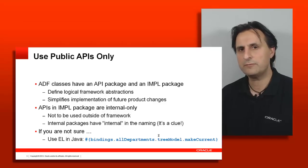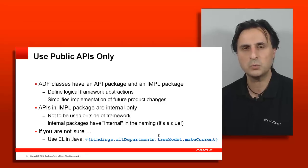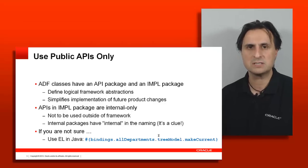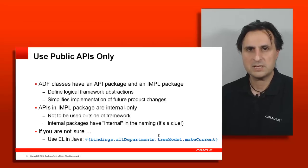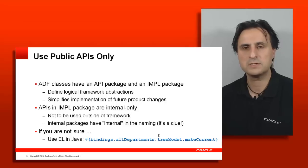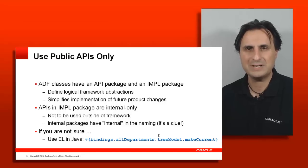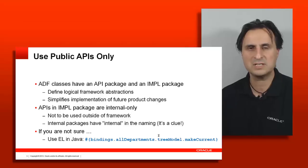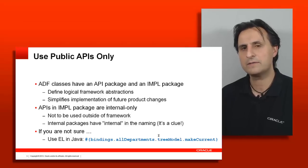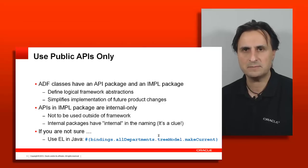If you access a class that you're not sure is internal or public, or that you definitely need but don't know how to work around, probably the best suggestion is to use expression language. For example, a table has a selection listener ending with makeACurrent to set the current record in synchronization with a selection in the table. What you can do is write a custom selection listener and create a method expression that calls out to the expression language string copied from the default selection listener, preserving the default framework behavior while allowing customization.